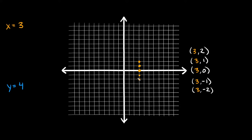So now, what do all of these points have in common? Can you see that their x-coordinate is 3? All of them have a 3 for their x-coordinate. So if we want to know where all the x-coordinates are equal to 3, it would be along every single point on this vertical line right here.